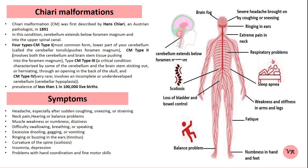In Type 1, the lower part of the cerebellum extends into the spinal canal. Type 2 is often associated with spina bifida. Type 3 involves the cerebellum and brain stem herniating into an opening in the back of the neck. In Type 4, the cerebellum is underdeveloped or absent.